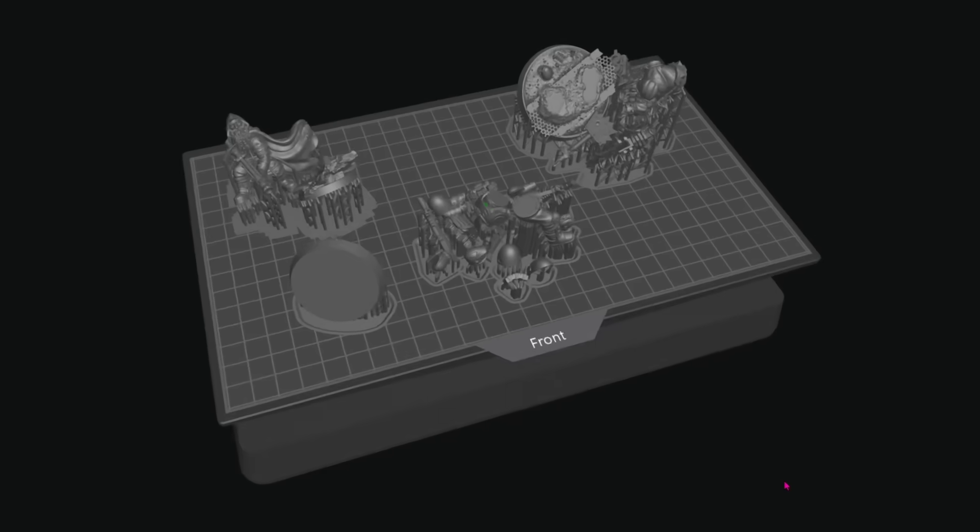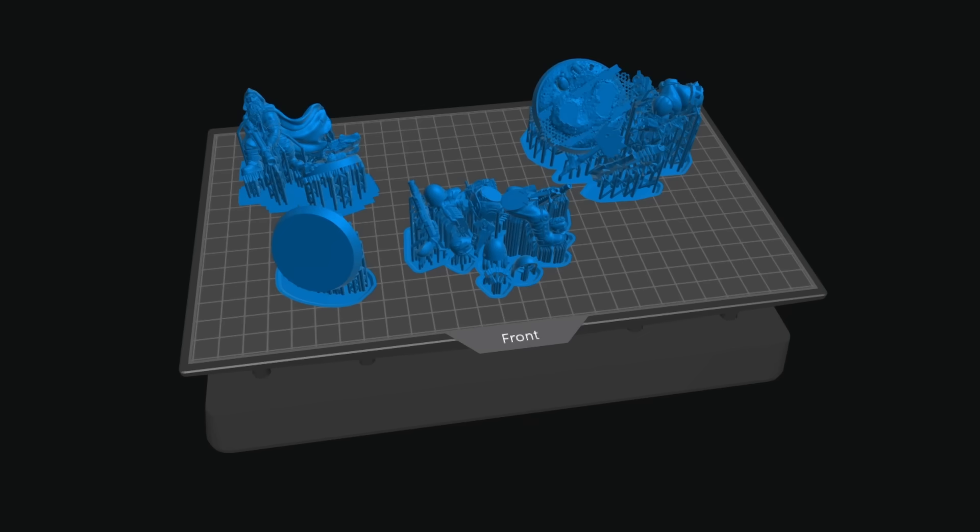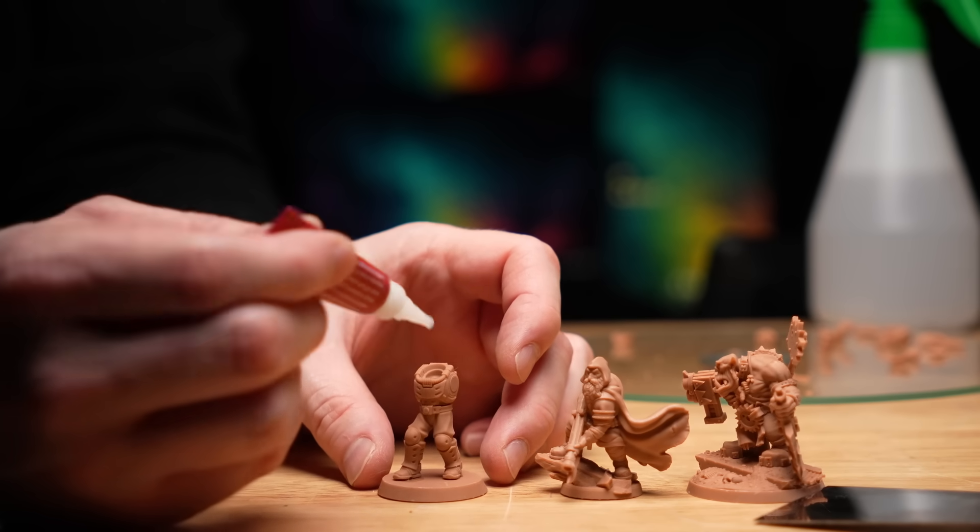This here is what a successful print is going to look like. There's three miniatures in total, an orc, a dwarf and a space marine and each one has a printed base as well and if you like the look of any of these miniatures I'll tell you soon where you can get them.